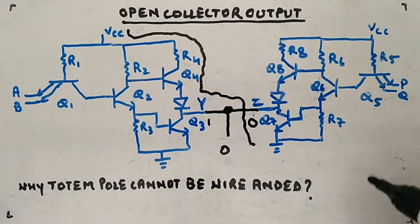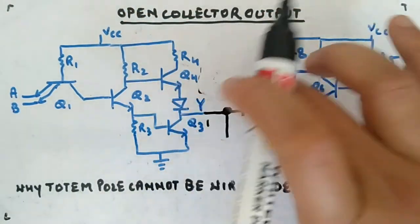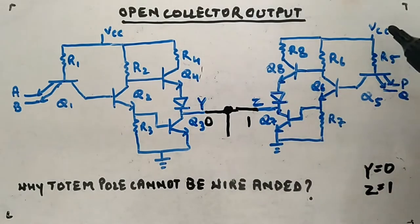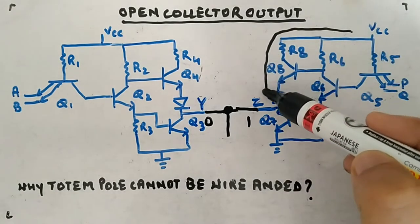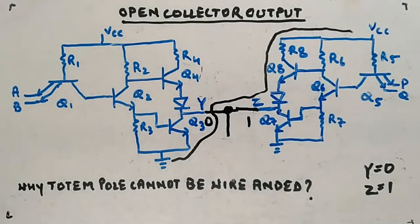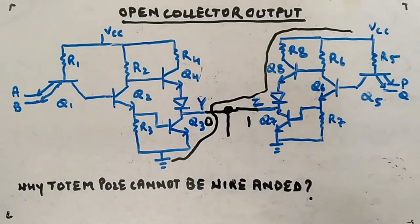Similarly, when Y equals 0 and Z equals 1, the same problem occurs in reverse. This path will be ON from one side and this path will be ON from the other side, so again a large current flows through the circuit. That can destroy the transistors entirely. That's why we don't connect totem pole outputs in wire-AND form — they tend to produce large currents among the transistors when the outputs are in this conflicting fashion.